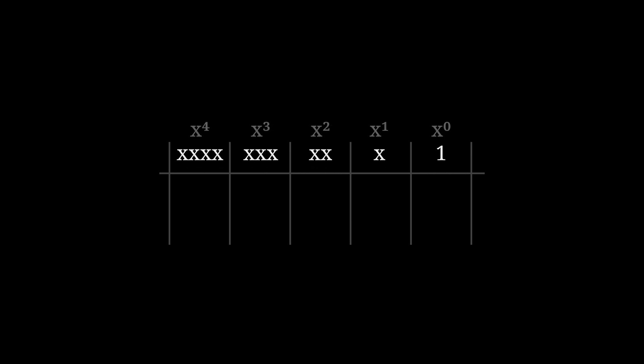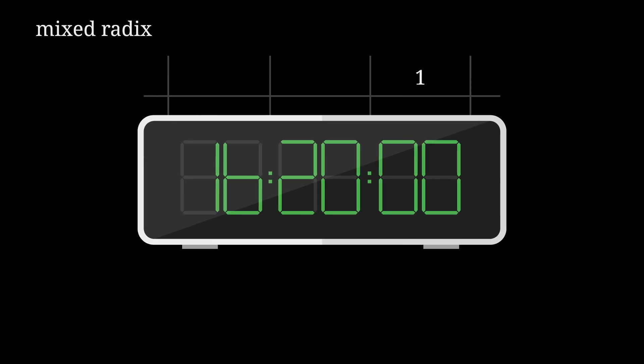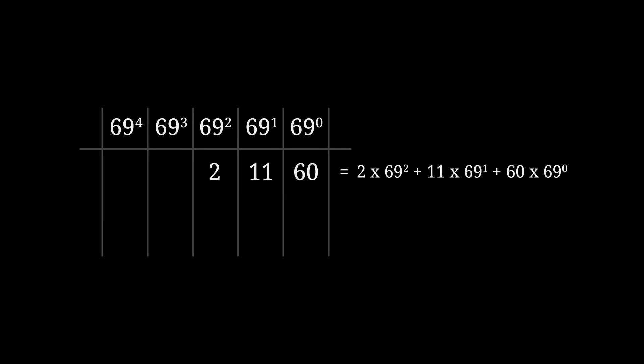Now if you do stick with the positional system, you still have options. You know how in a standard positional notation system the base never varies from position to position? Well, in a mixed radix system, the base CAN change position to position. Specifically, each position represents a value which is some multiple of whatever the digit to the right is — like a digital clock. 60 seconds in a minute, 60 minutes in an hour, 24 hours in a day. Not only that, but we count up to 20 and 60 using our base 10 numbers, which is a great strategy for dealing with very large bases. So if I was working on a base 69 system, I could bypass the need to invent 69 separate symbols by just counting up to 69 using a smaller base, in effect allowing each column in my positional system to hold multiple digits.